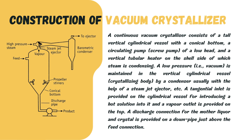A vacuum crystallizer consists of a tall vertical cylindrical vessel with a conical bottom, as shown in the picture on screen. It is equipped with a circulating pump, generally a screw pump with a low head, and a vertical tubular heater on the shell side where steam gets condensed. A steam ejector is used to create and maintain the vacuum in the cylindrical vessel. An inlet in the tangential direction is provided for feeding the hot solution, a vapor outlet is provided on the top, and a down pipe is provided for discharge of mother liquor and crystals.